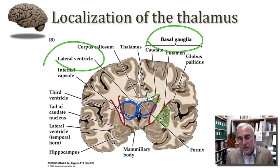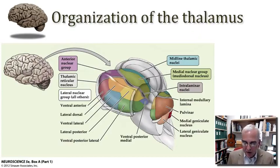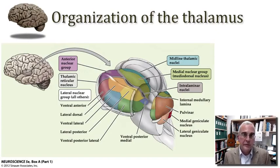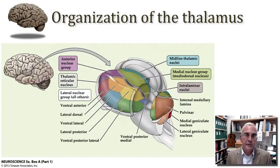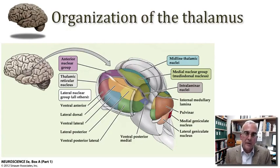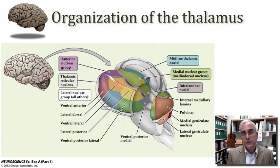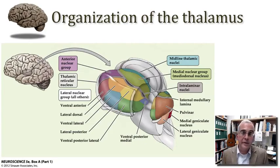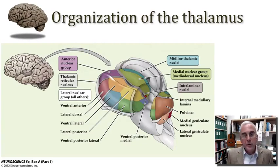Looking inside the thalamus, it is really not one thing — it is dozens of things. It is dozens of discrete collections of cells that each maintain their own set of input and output relations to other parts of the nervous system. The thalamus comprises some 20 or 30 individual nuclei, depending upon your tolerance for dividing up different parts of this structure. These 20 or 30 nuclei represent discrete pathways providing inputs to the thalamus, and then the thalamus in each subdivision gives rise to outputs directed mainly to the cerebral cortex. How can we make sense of these subdivisions? A simple anatomical framework helps.